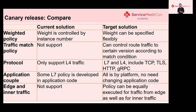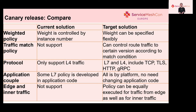This table summarizes the difference between the two canary approaches. For weighted policy, with the current solution, weight is controlled by instance number. With the target solution, weight can be specified flexibly. The former does not support traffic match policy, and the latter can control traffic to a certain version according to match conditions. The current solution only supports L4 traffic, and the target solution can support both L7 and L4, including TCP, gRPC, HTTP, and JavaScript. With the current solution, some L7 policy is developed in application code, but with the target solution it is in the platform — no need to change any application code.